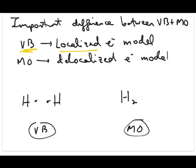and the MO model is often called the delocalized electron model. Localized means that the electron is restricted or is fixed at a certain atom, is localized to a certain atom.